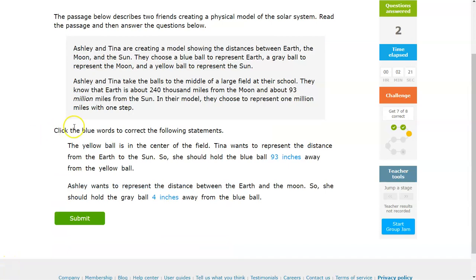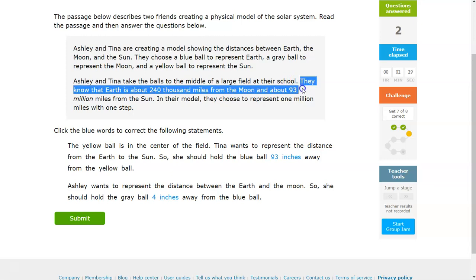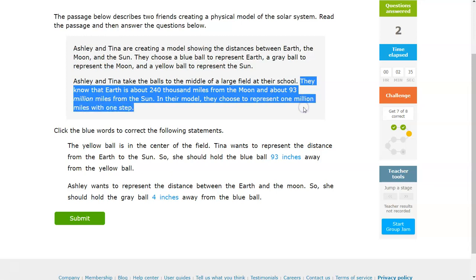Alright, so for this question, it says to read the passage and answer the question below. The main thing you want to look at is on this part here. Earth is about 240,000 miles away from the Moon, about 93 million miles away from the Sun. And the model chose to represent 1 million miles with one step.